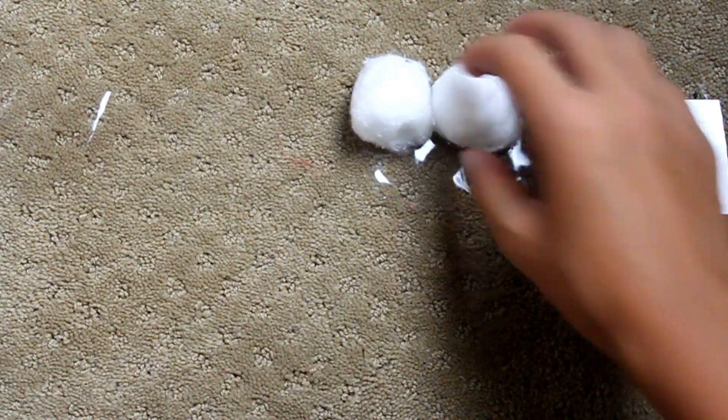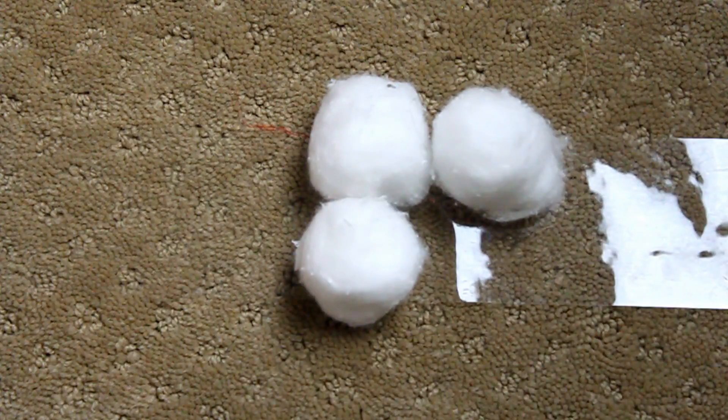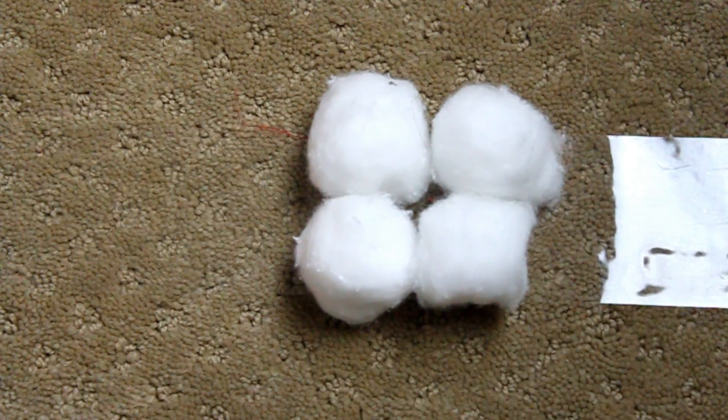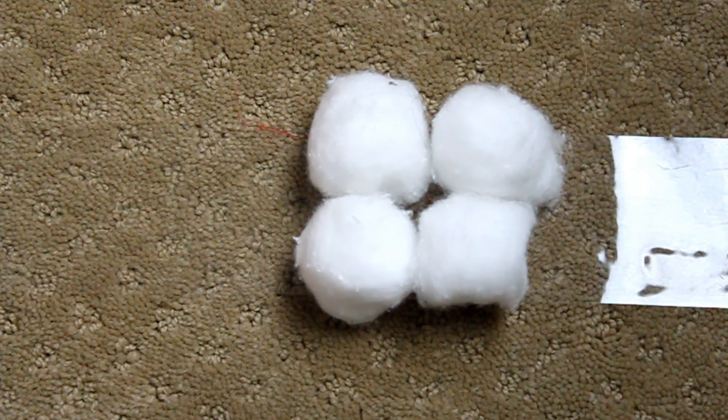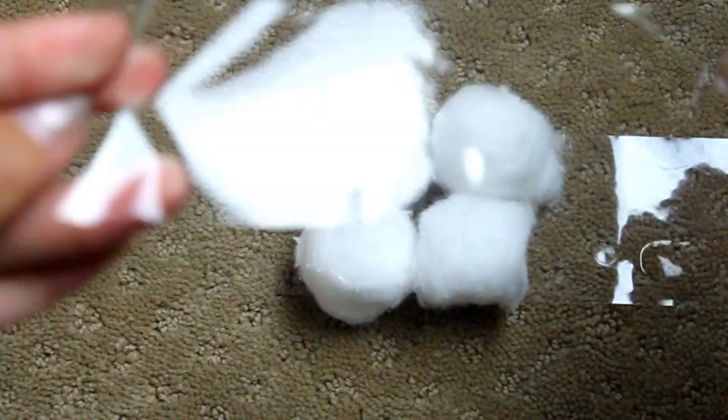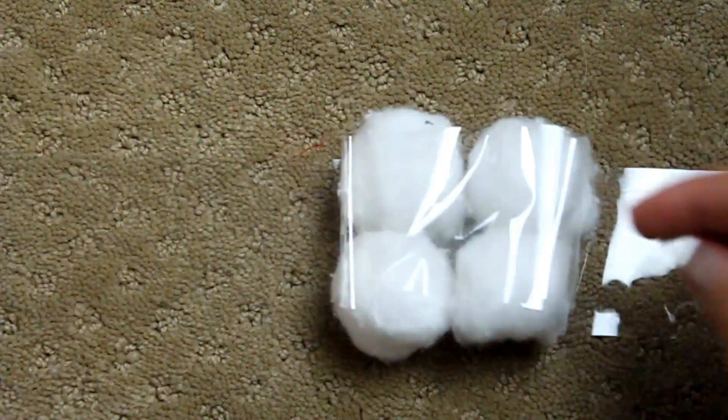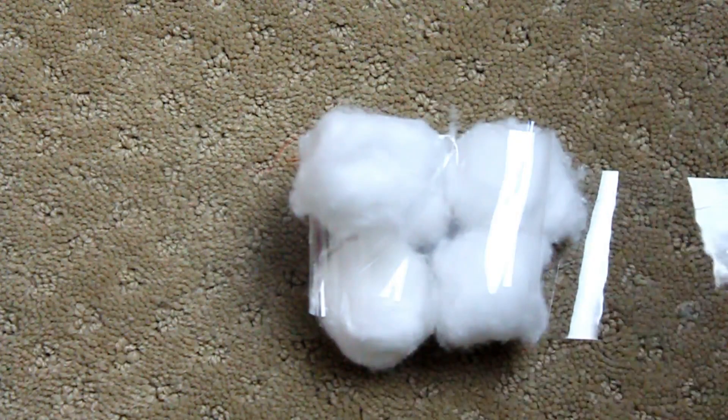Okay, first you want to get a long piece of tape, and I have one right here. Now what you're going to do is place the cotton balls like this. Once you get to that four, you're going to want to get some tape, do the whole double-sided thing, then add it.